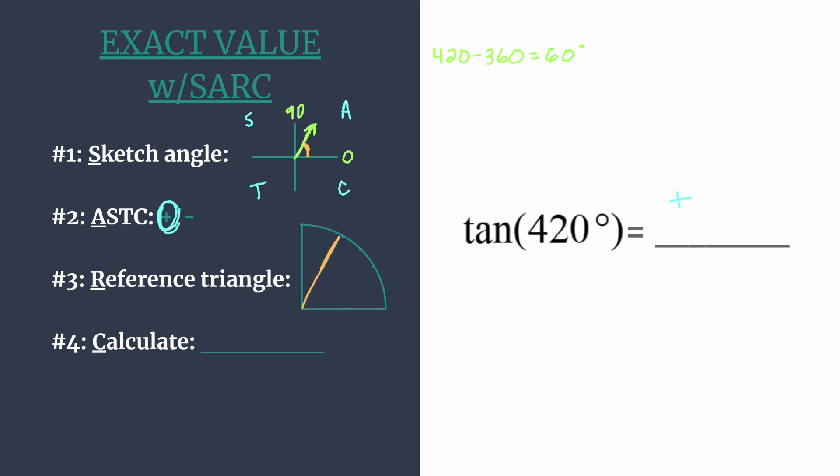So that means we want to be working with our 60-30 special right triangle, that's the one with the shorter horizontal leg and the longer vertical leg. And from our background knowledge of these special right triangles, we know the coordinates that go with this must be 1 half, square root of 3 over 2.